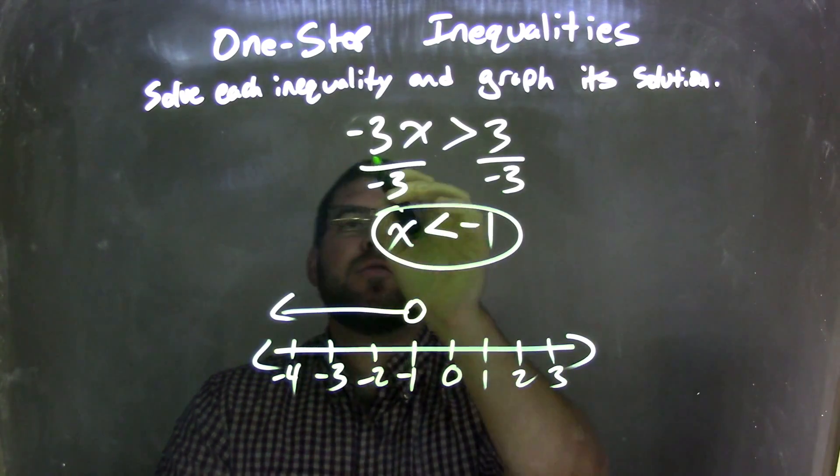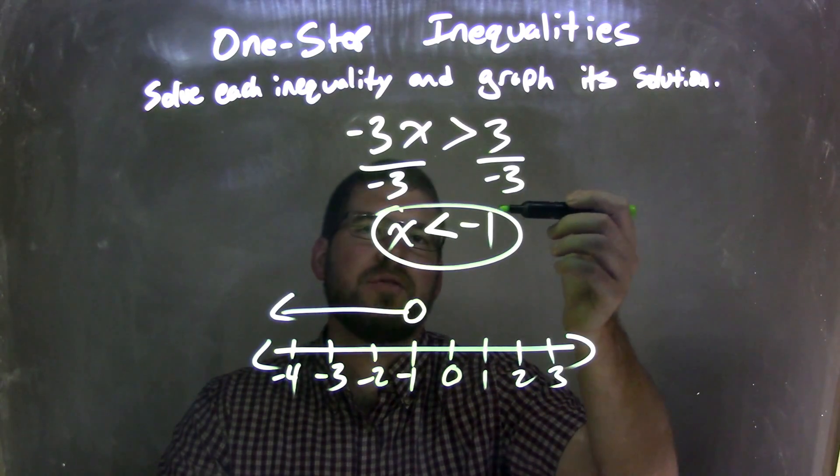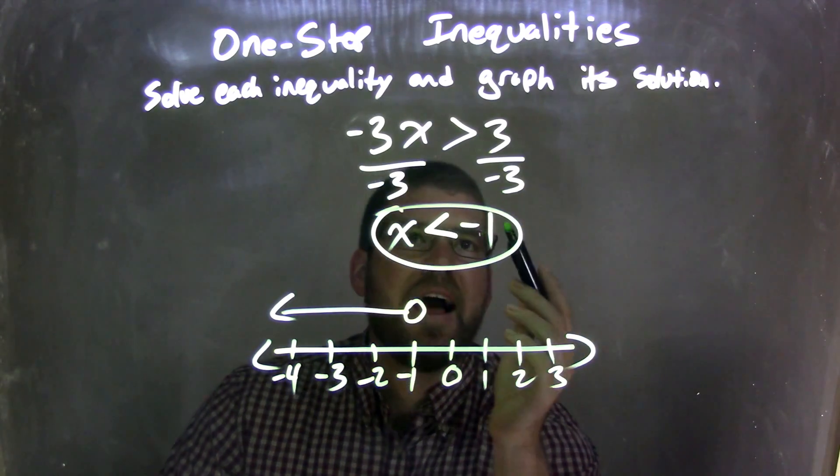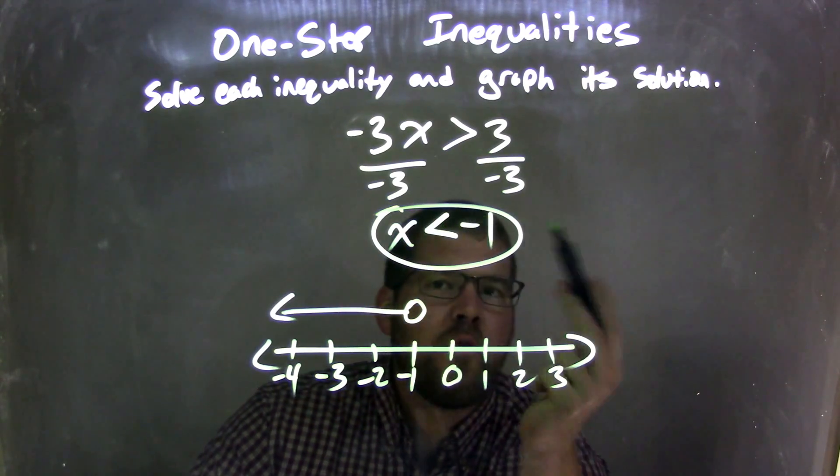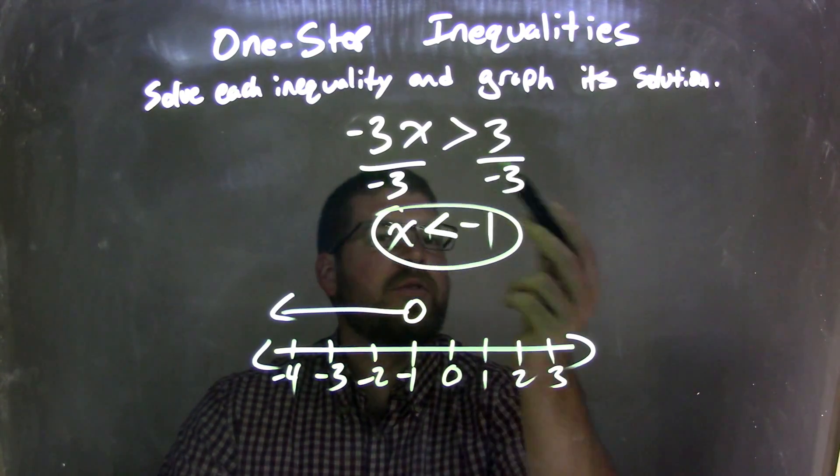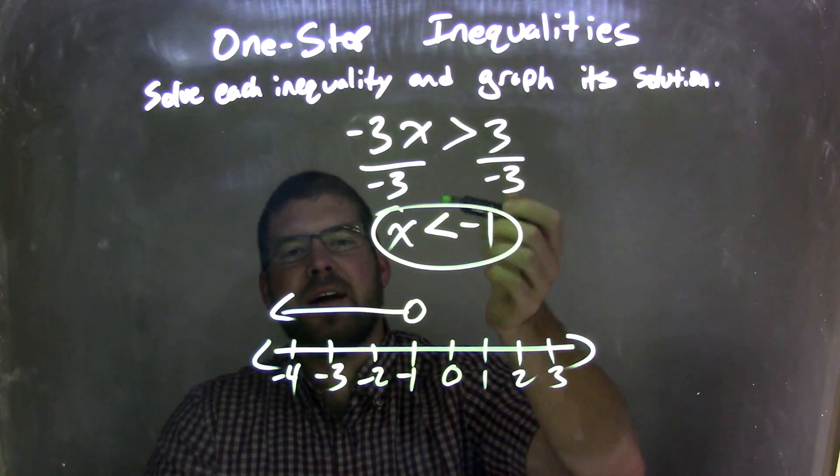So let's recap. We start with negative 3x is greater than positive 3. By dividing by negative 3 to both sides, it left the x by itself and the negative 1 on the right. But when we divide by a negative over the inequality, we have to flip the inequality from a greater than sign to a less than sign.